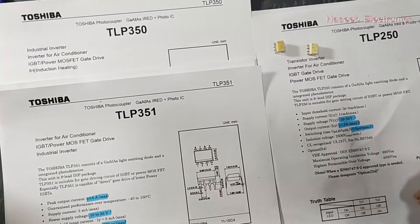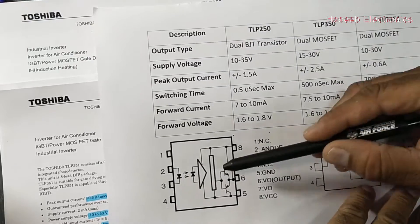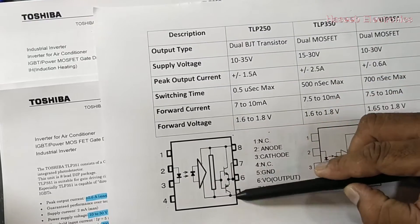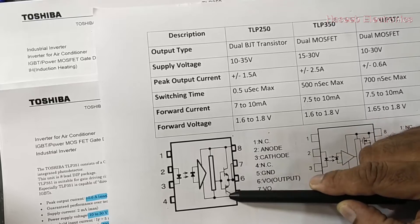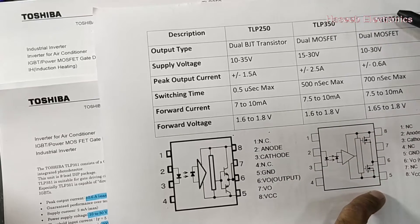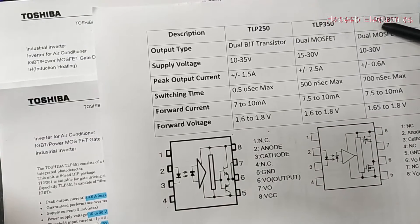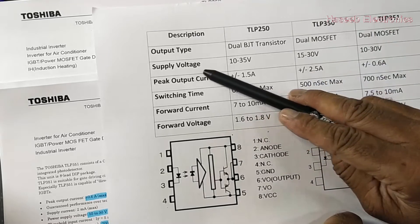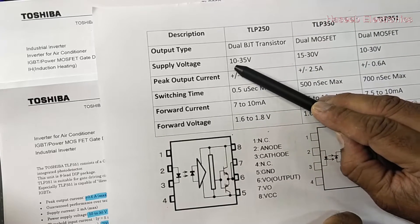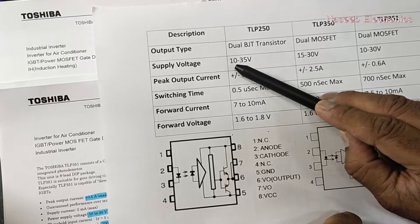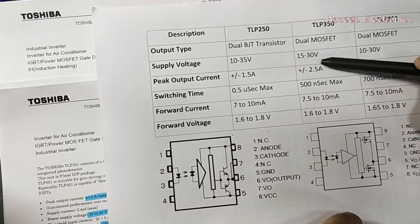TLP250 is a transistor-based optocoupler. It has a dual transistor push-pull stage. TLP350 and TLP351 are MOSFET-based optocouplers.